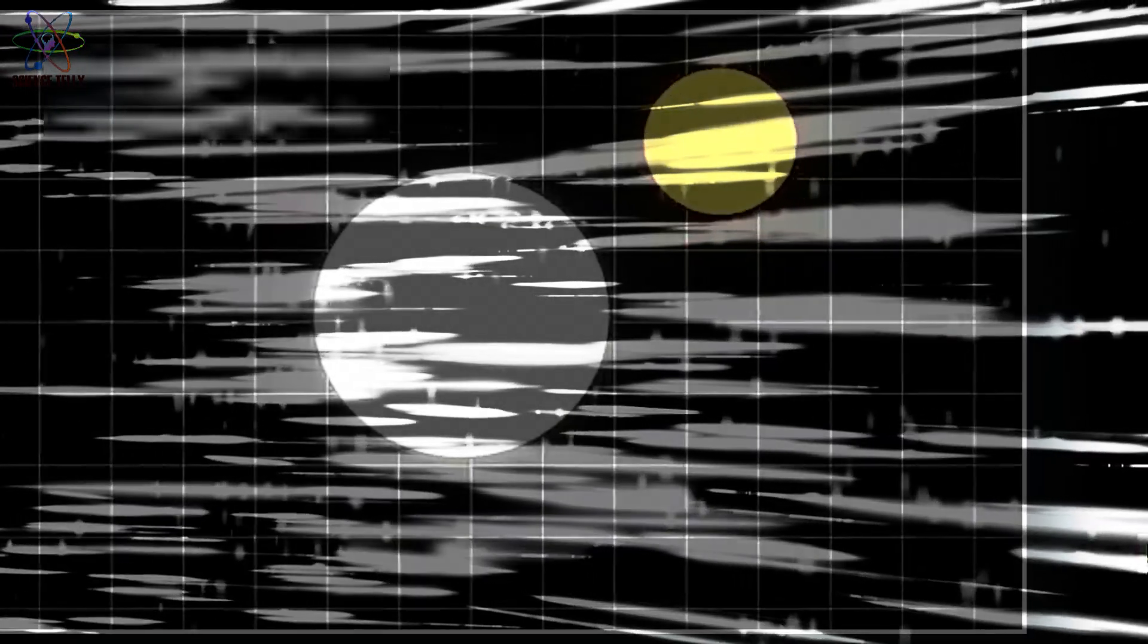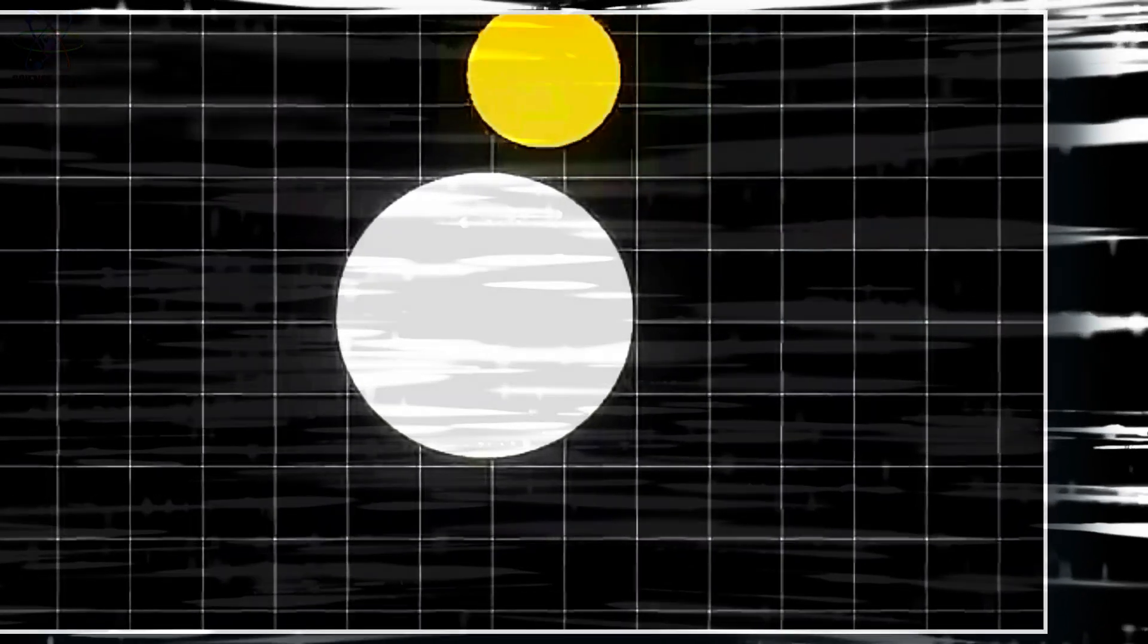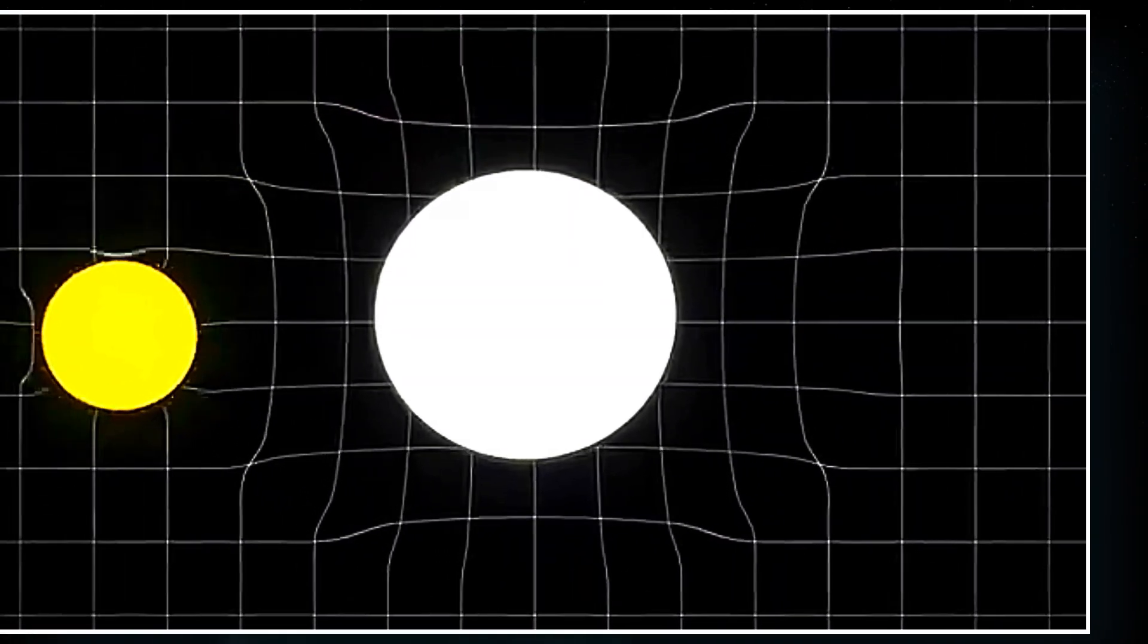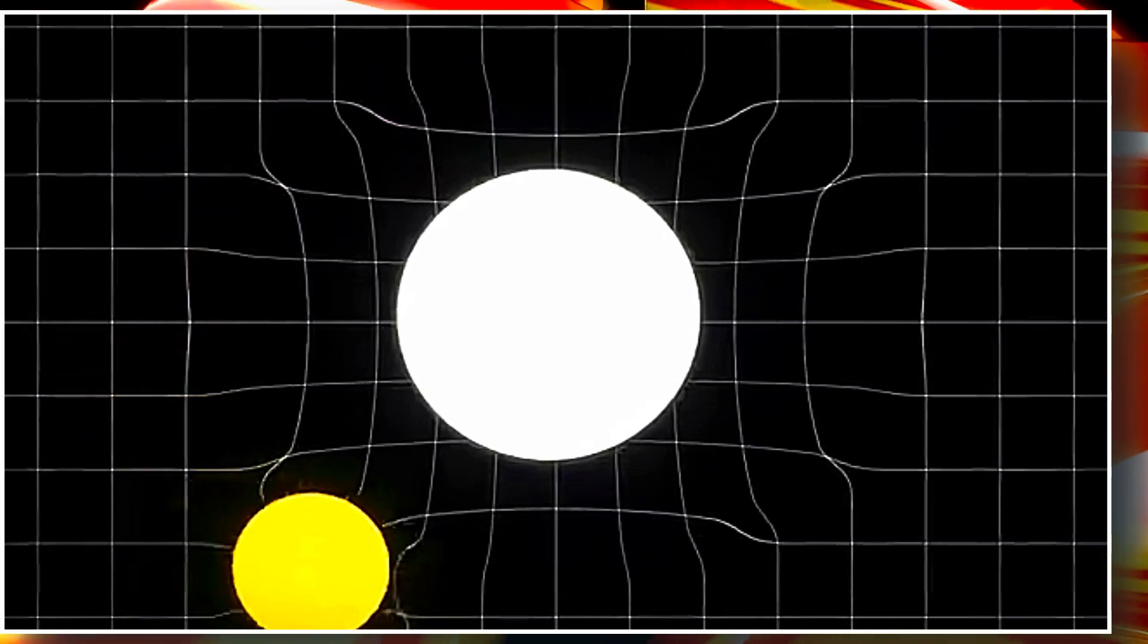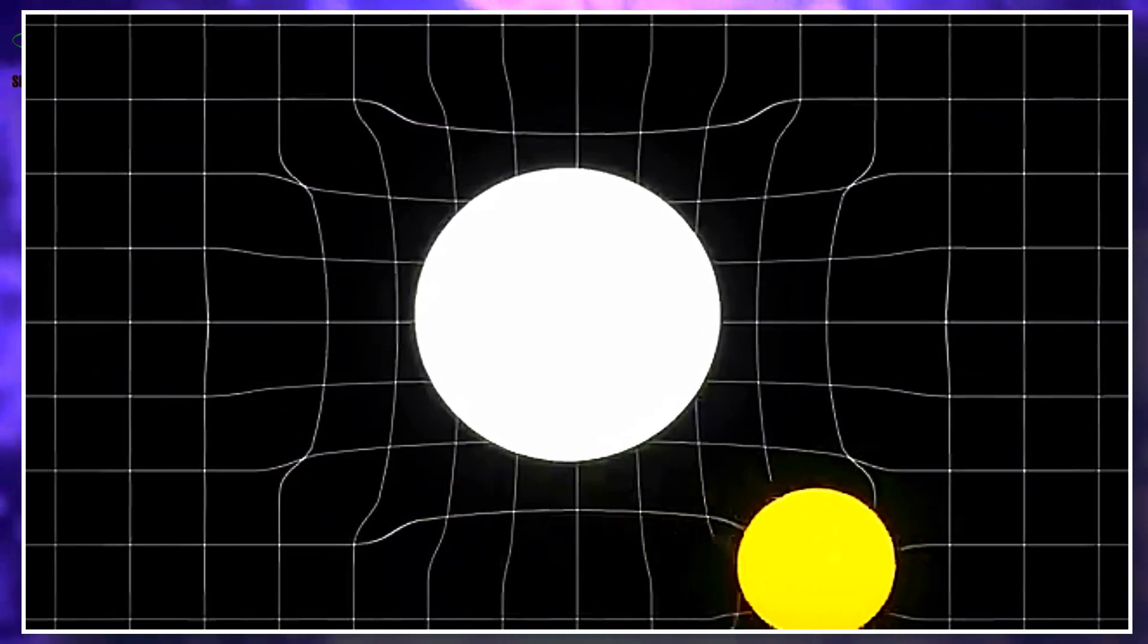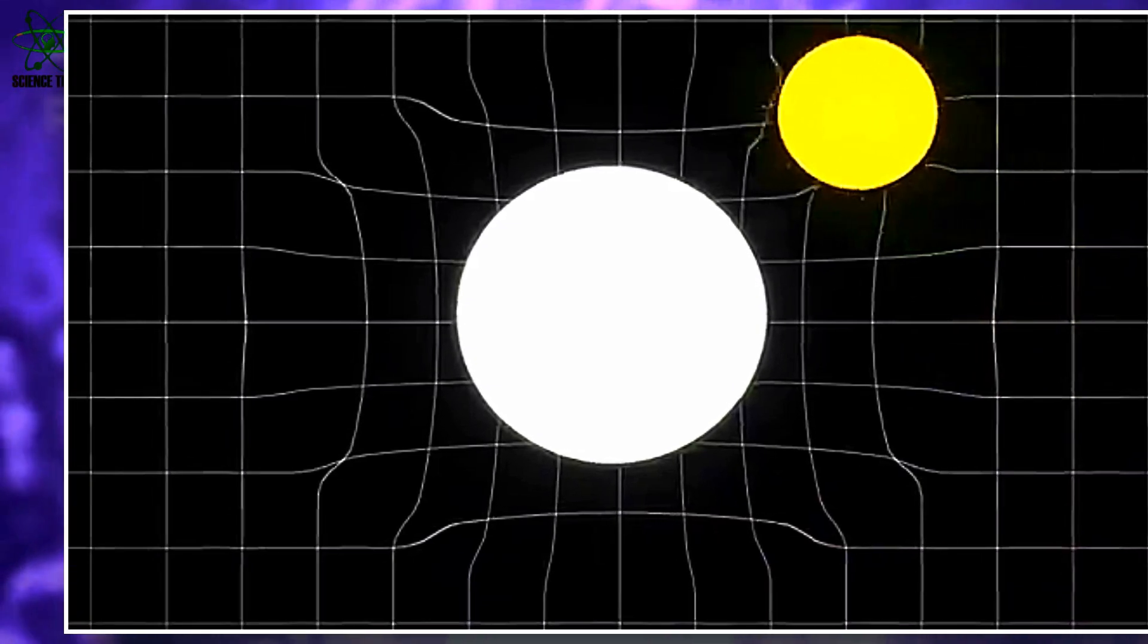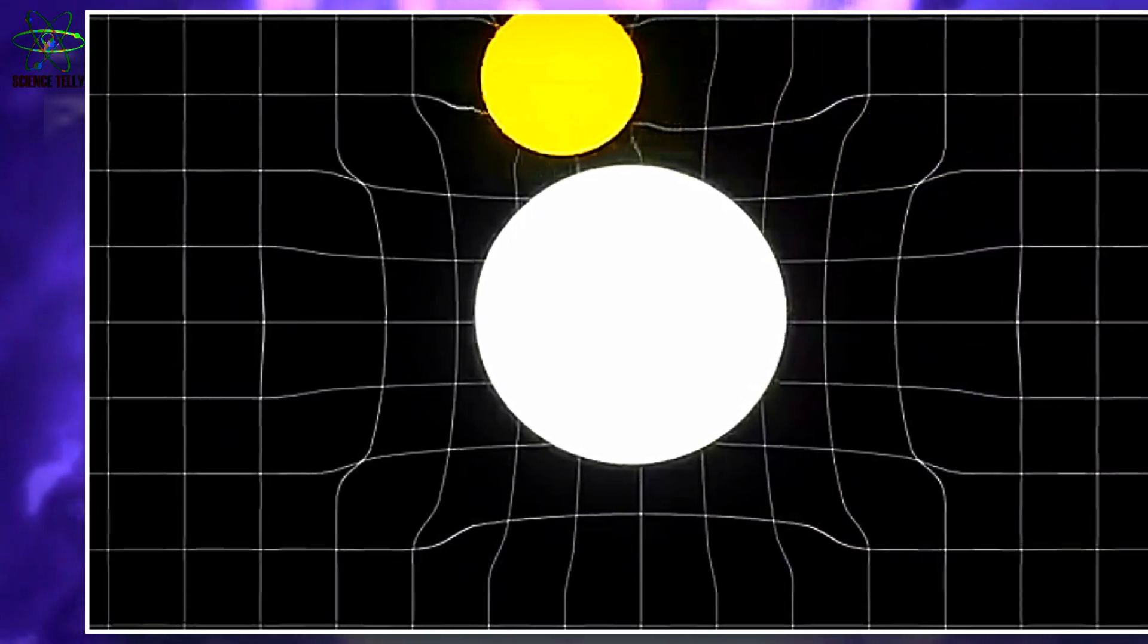To picture this, imagine spacetime as a giant rubber sheet, like a trampoline. Put a heavy bowling ball in the center, and the surface curves. Now roll a marble across it. It doesn't go in a straight line anymore. It curves toward the bowling ball, not because it's being pulled, but because the surface it's moving on is distorted.